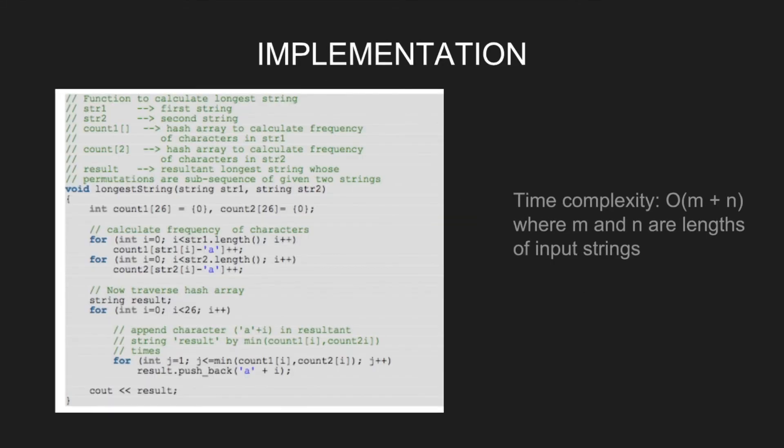Now let's have a look at the implementation. We create two count arrays count1 and count2 for string 1 and string 2 respectively. Traverse for string 1 and for every character, do count of string 1i minus a plus plus, similarly for count2 array.